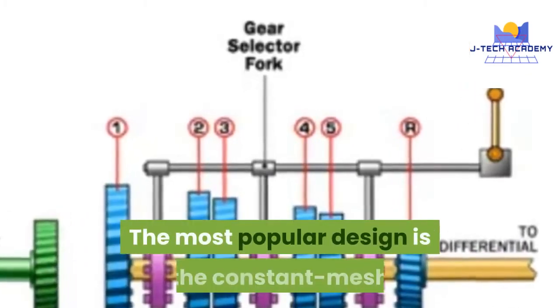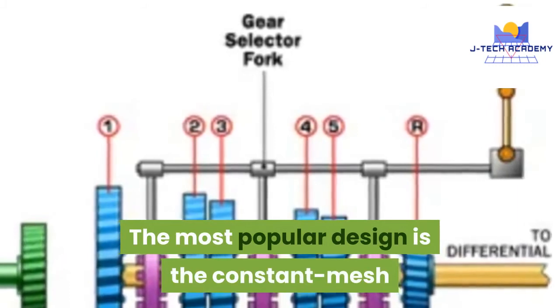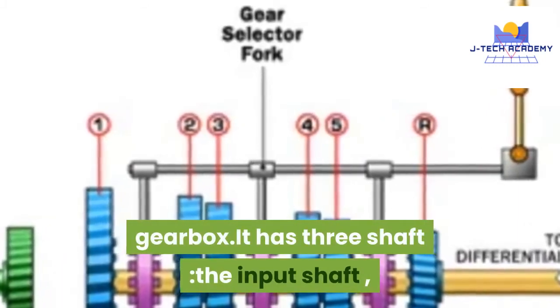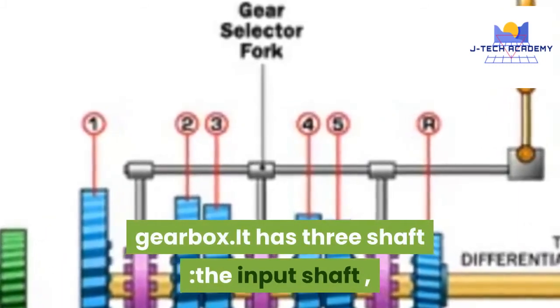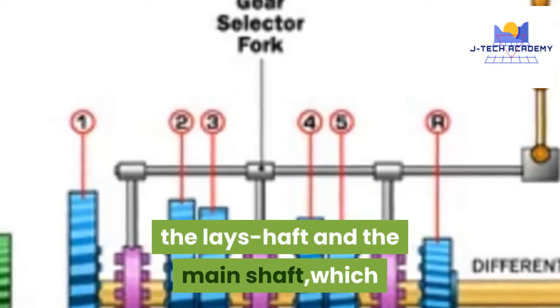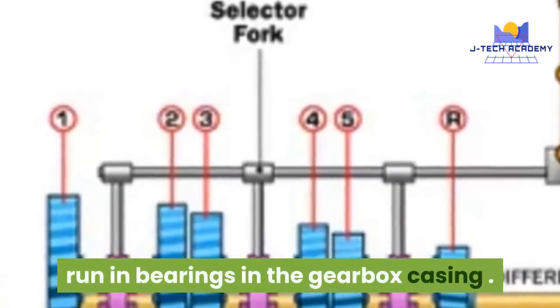The most popular design is the constant mesh gearbox. It has three shafts: the input shaft, the lay shaft, and the main shaft, which run in bearings in the gearbox casing.